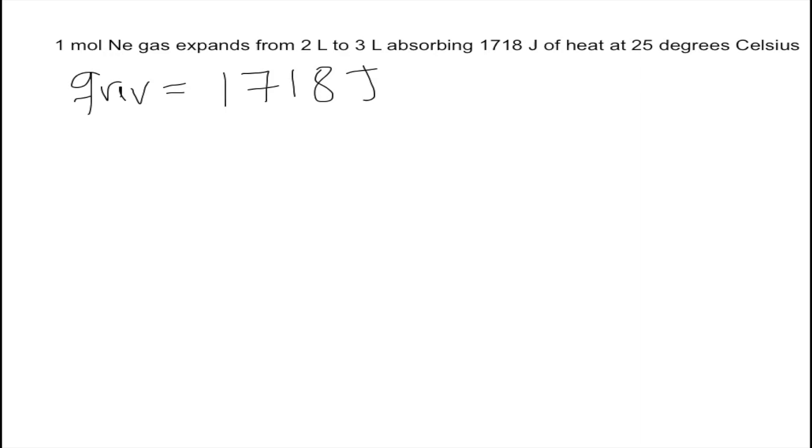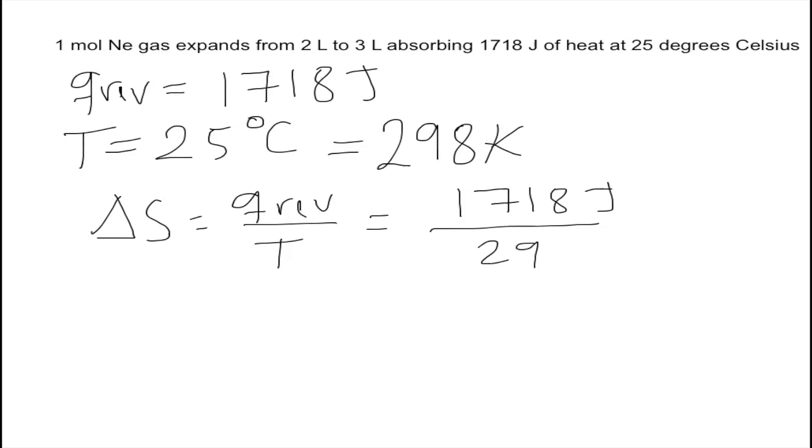The temperature is given in Celsius, so we convert it to Kelvin: 25°C equals 298 K. Our formula is ΔS equals Q reversible over T, so we plug that in.